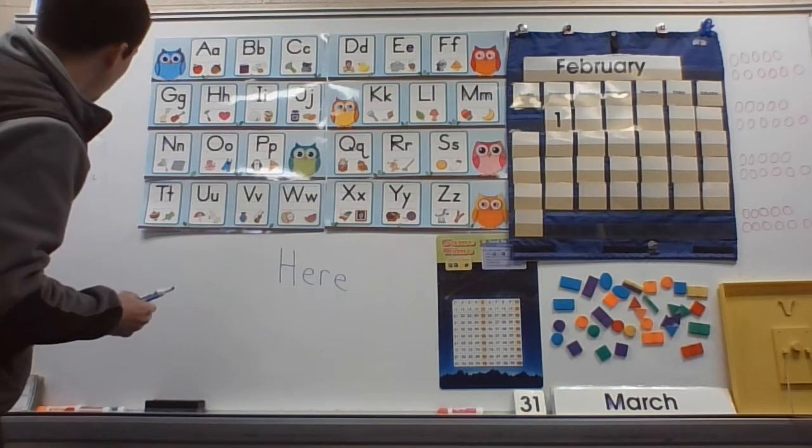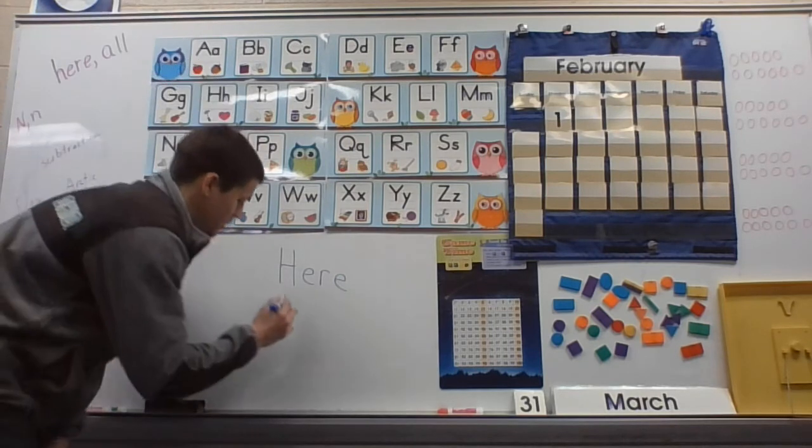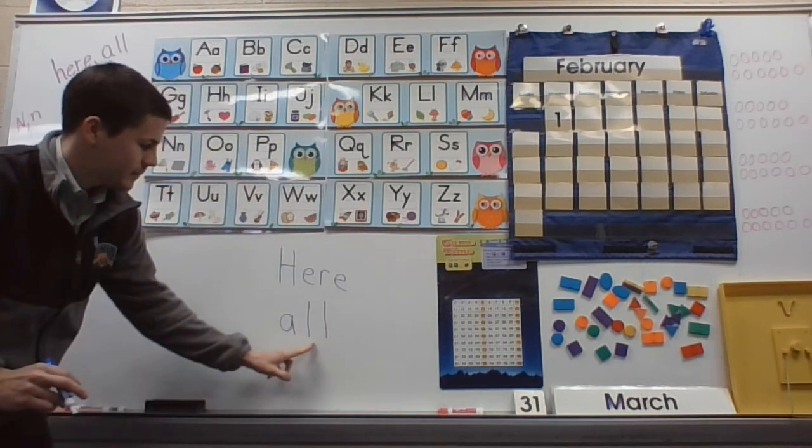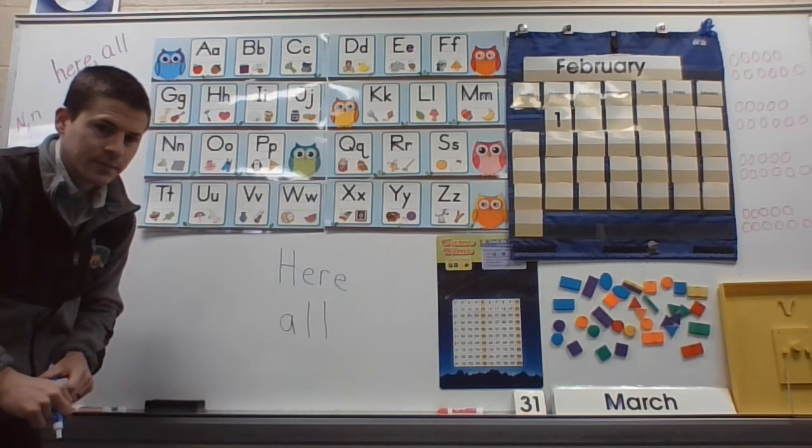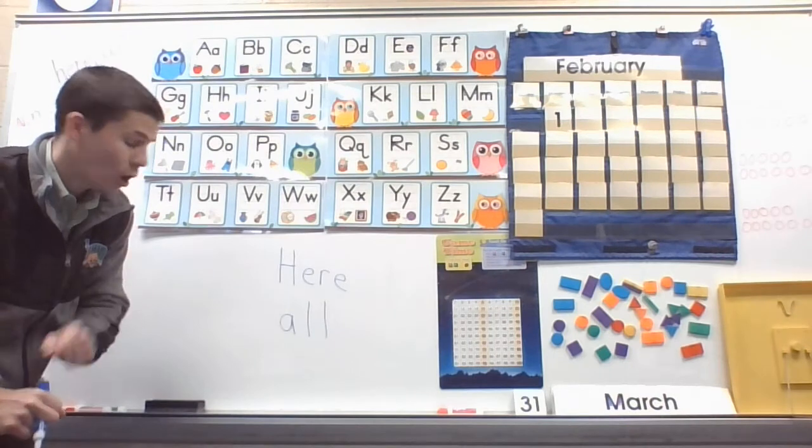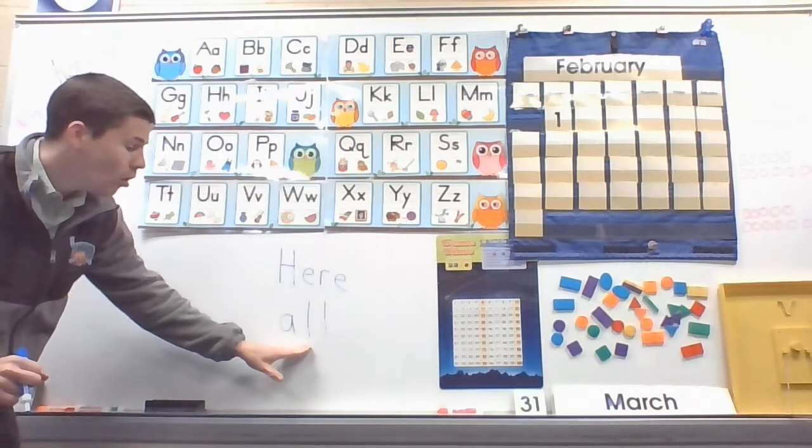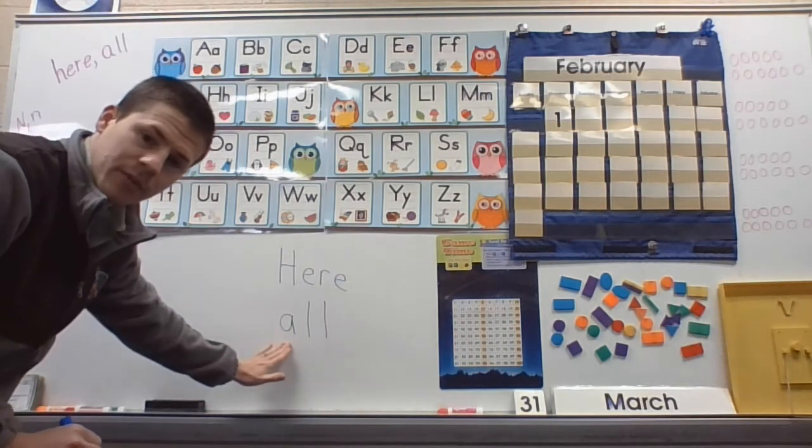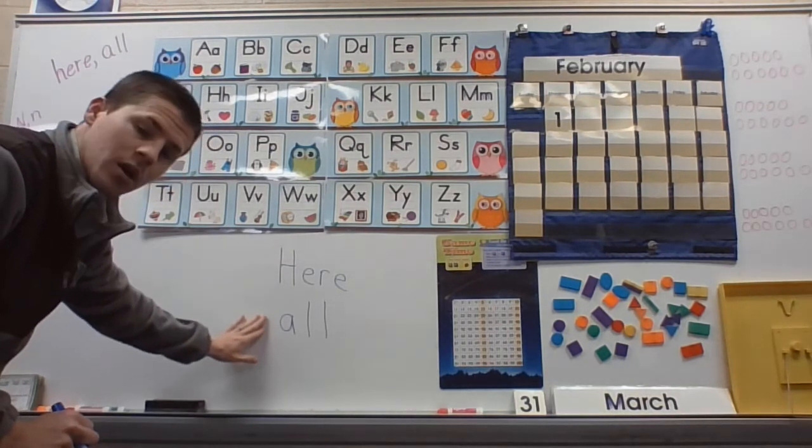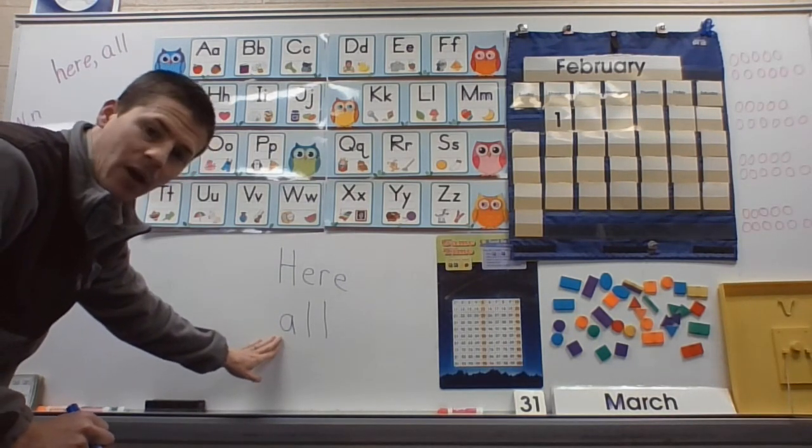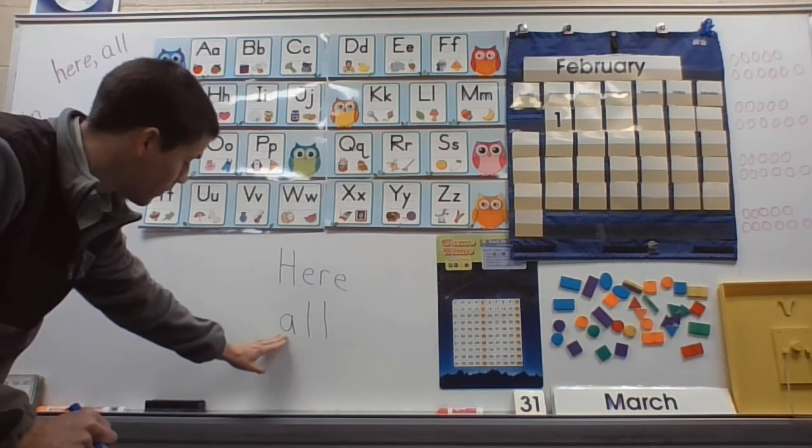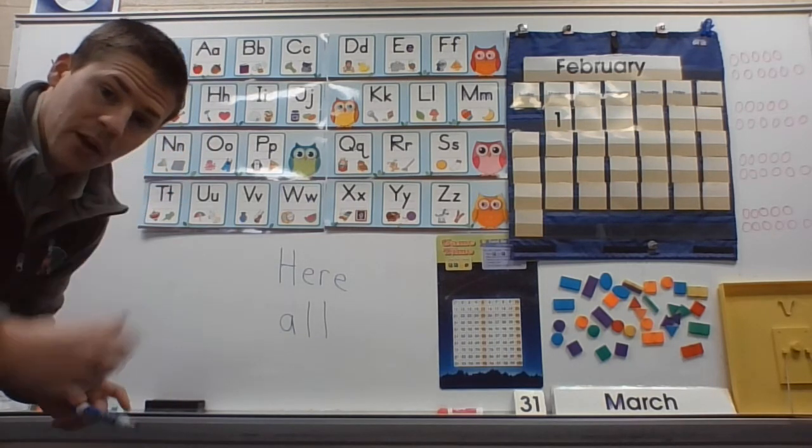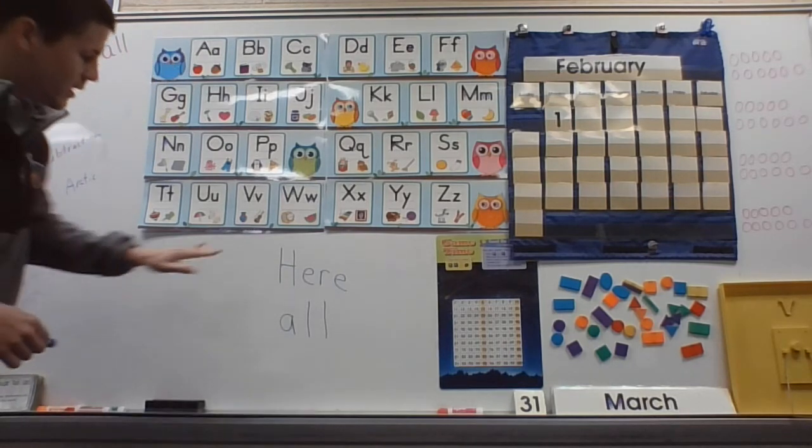Our other sight word is three letters. I'm going to make it a lowercase, like it's in the middle of a sentence. Do you know what that says? Rhymes with tall. Oh, it rhymes with ball. All. Now, if you know this rhymes with ball, you might be able to figure out that it's all, because there's no consonant on the beginning. It starts with a vowel. All. Everybody read all. A-L-L. There's two L's on the end. Okay. Here and all.